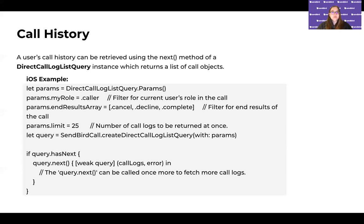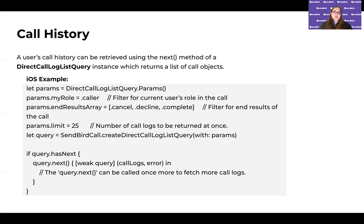For call history, you can use a direct call log list query, which will list all the direct calls for a particular user. You can specify your role — caller or callee — to see either all the calls you made or all the calls that came in to you. You can filter by canceled calls, completed calls, and other criteria. You can specify how many results you want back at one time, like 25, and if there are a lot of logs, you can fetch additional ones by calling next.